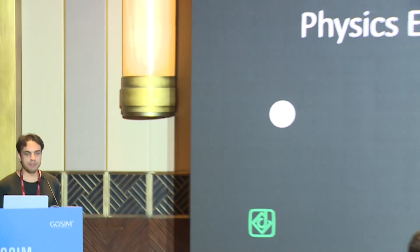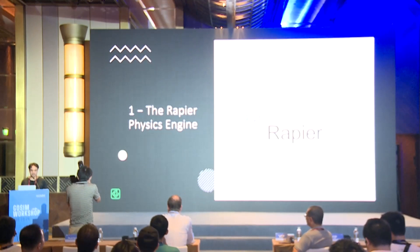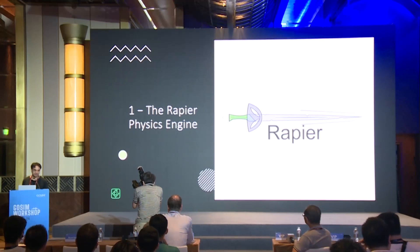Good morning everyone. Thank you all for being here and thank you for having me in this workshop. I'm Sebastien Crozet. I've been working with Rust for quite a few years now, mainly on mathematical libraries, in particular nalgebra, which is one of the main linear algebra libraries in Rust, and Rapier, which is a physics engine for Rust. In this presentation we have two parts: the first part will be about Rapier — its features, some demos, and basic usage — and a second part which is more technical and theoretical about distributed physics with Rapier.